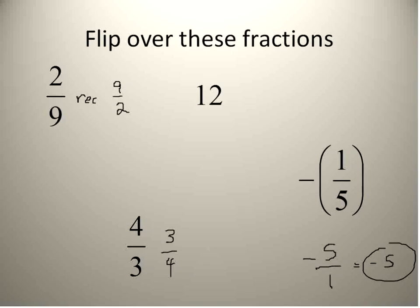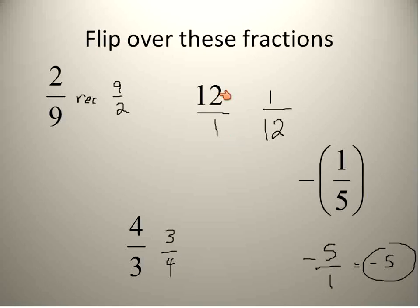That takes us to our final example: 12. How would we flip over 12? We would have to recognize that 12 can also be written as 12 over one, so the reciprocal would then be one over 12. So a reciprocal is just flipping over a fraction. When you get whole numbers, you flip them over, put them in the denominator, and put one in the numerator. When you get one over a certain number, you can flip it over to being five over one, but if that's your final answer, you simplify and just get rid of the denominator.